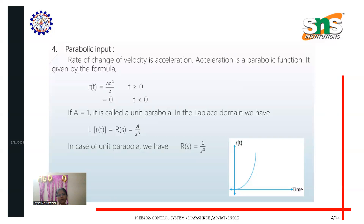When t is greater than zero the equation is r(t) = a·t²/2, and when t is less than zero the input signal becomes zero. For unit parabolic input, a equals one. Taking the Laplace transform, R(s) = a/s³, and for the unit parabola R(s) = 1/s³.